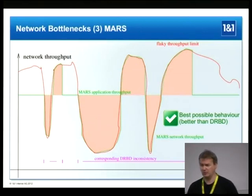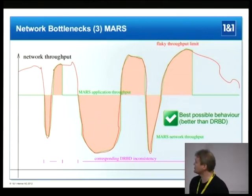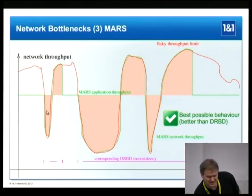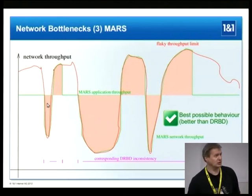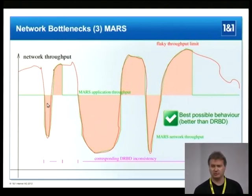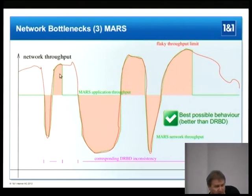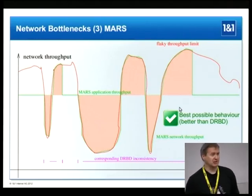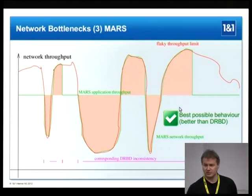In a second example the network is flaky — a behavior observed very often in practice, for example when coupling two data centers with backup processes running. The network can fluctuate by a factor of 10, which we have observed during operations. When the network is too slow, data is recorded in the transaction log; when the network gets better, it catches up. This is also the best possible behavior.